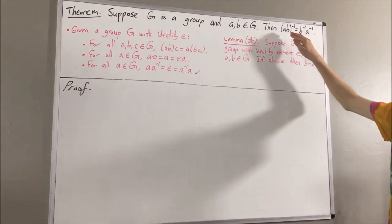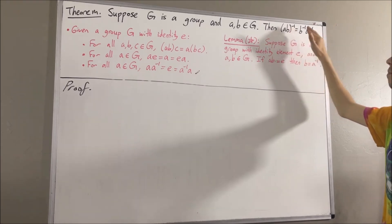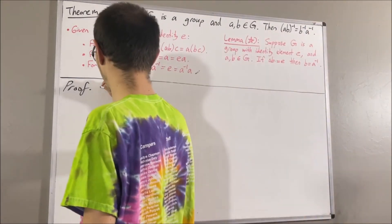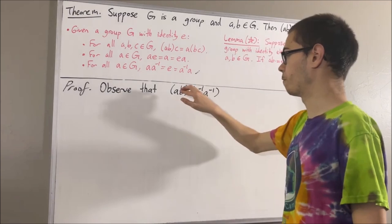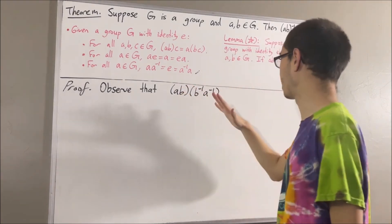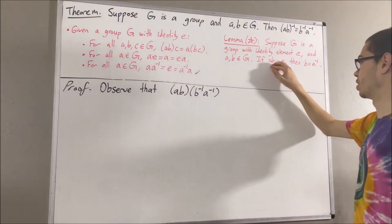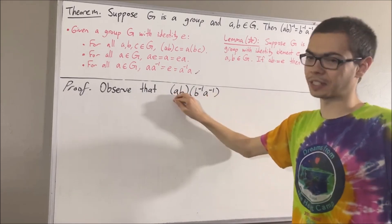The whole goal is to prove that this equality is true. And what we're going to do is we're going to perform AB times B inverse A inverse. We're going to show that if we multiply these two guys together, it results in E. If we can show that, then we can use this fact to conclude that this guy is equal to the inverse of this guy.